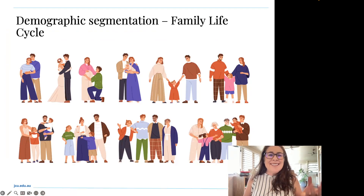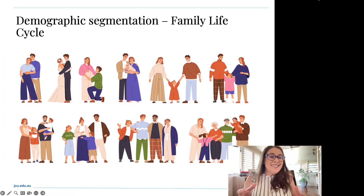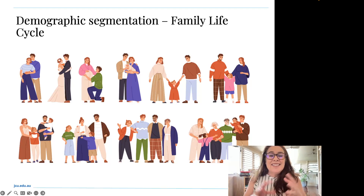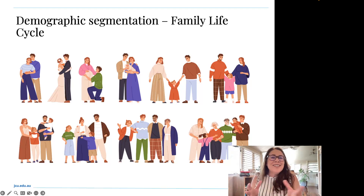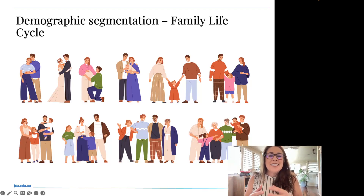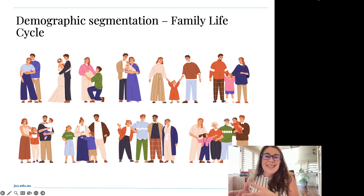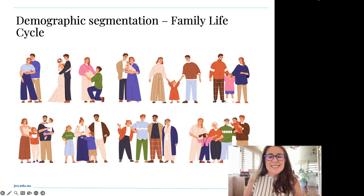Marketers also consider the family life cycle, which includes marital status and the presence and age of any children, as this affects consumers' needs for housing, appliances and different products. Going back to our Porsche example — a Porsche 911 GT3 is a zippy sports car that really isn't suitable for a family with three kids. So Porsche would target a customer without young children for that model, but would target families with their SUV model.